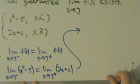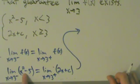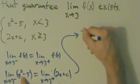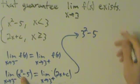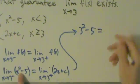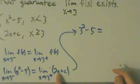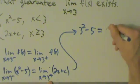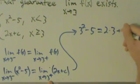So if we directly substitute on the left side, what do we get? Take the 3, put it into the x and we have 3 squared minus 5 on the left-hand side. What happens on the right-hand side? We have 2 times 3 plus c.